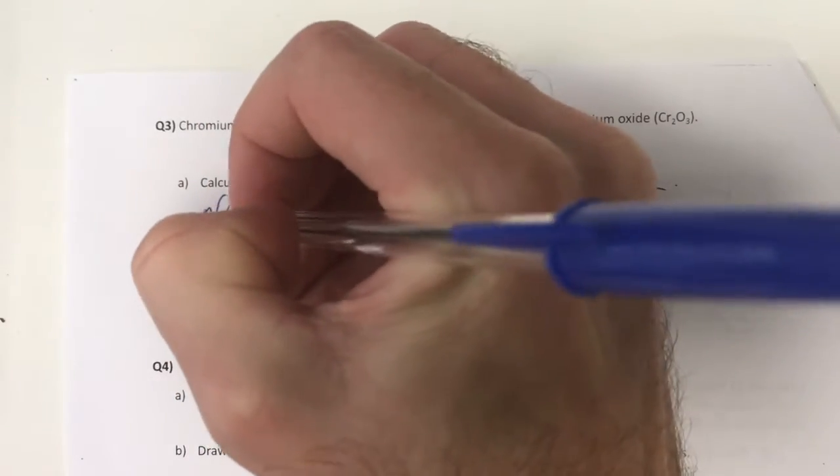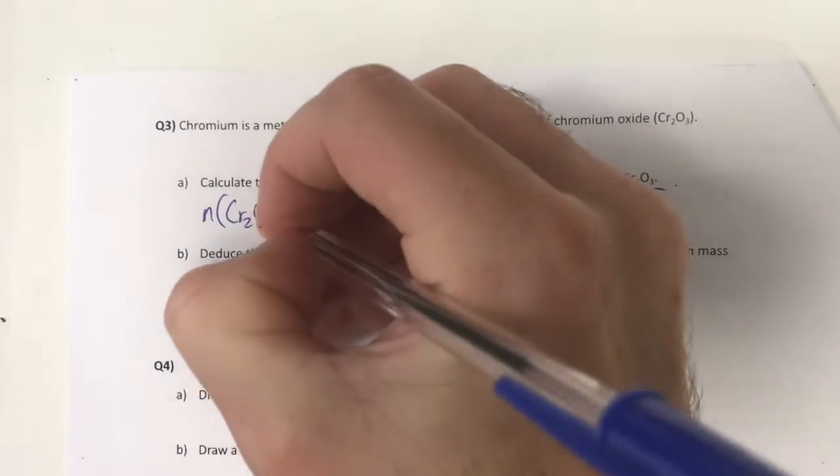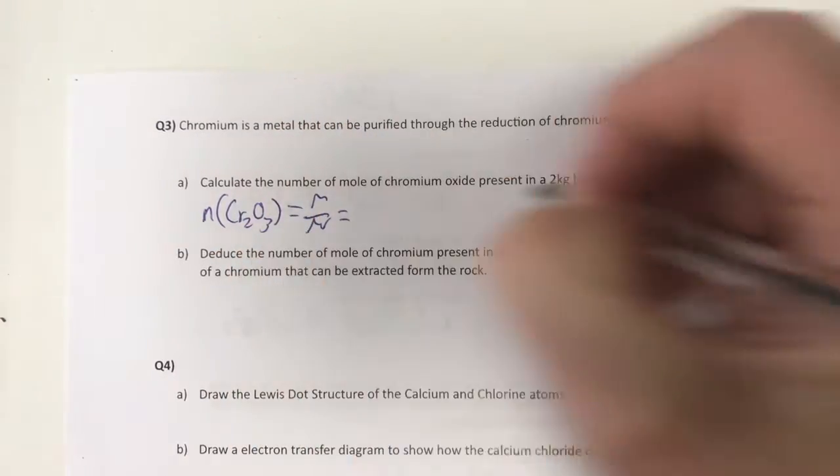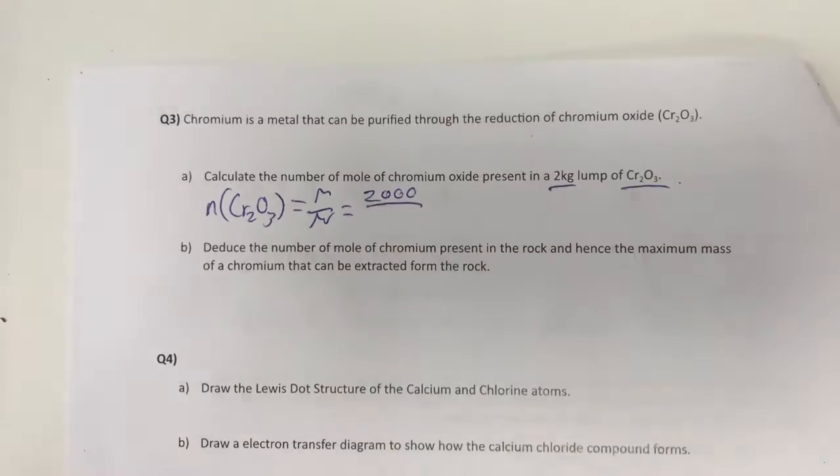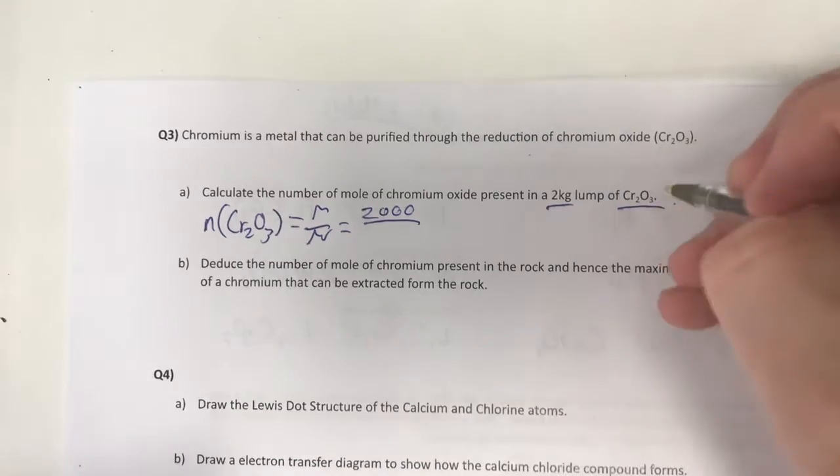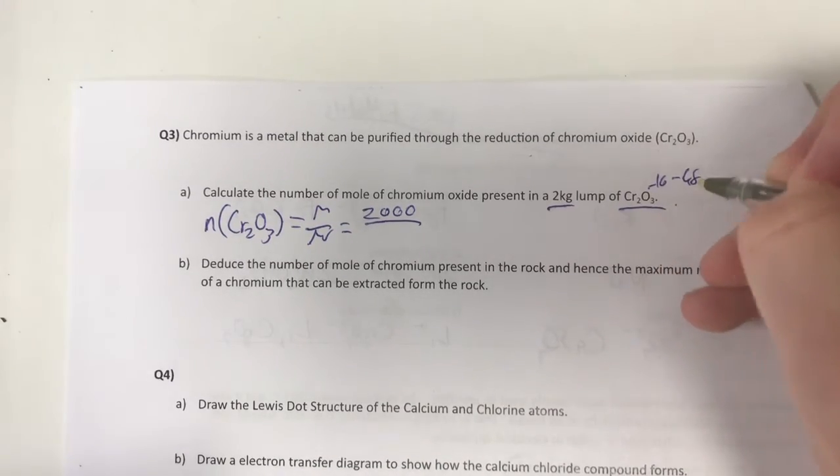So number of moles of Cr2O3 equals M over MR, which we've got 2 kilograms, that's 2,000 grams, divided by the molar mass of chromium oxide.